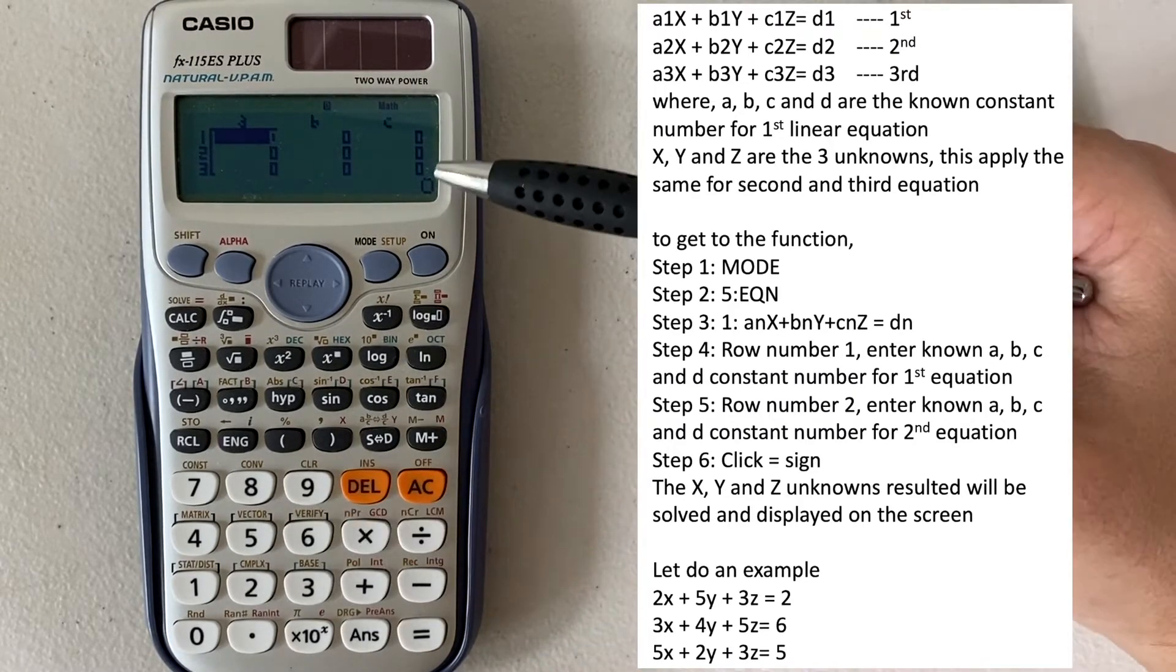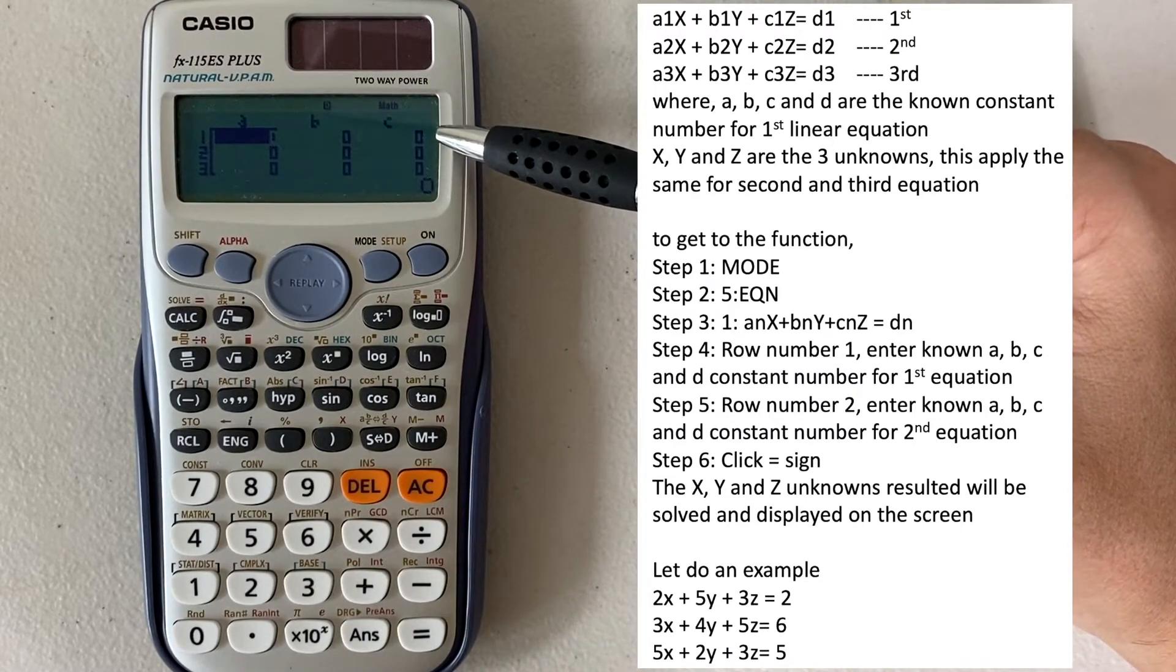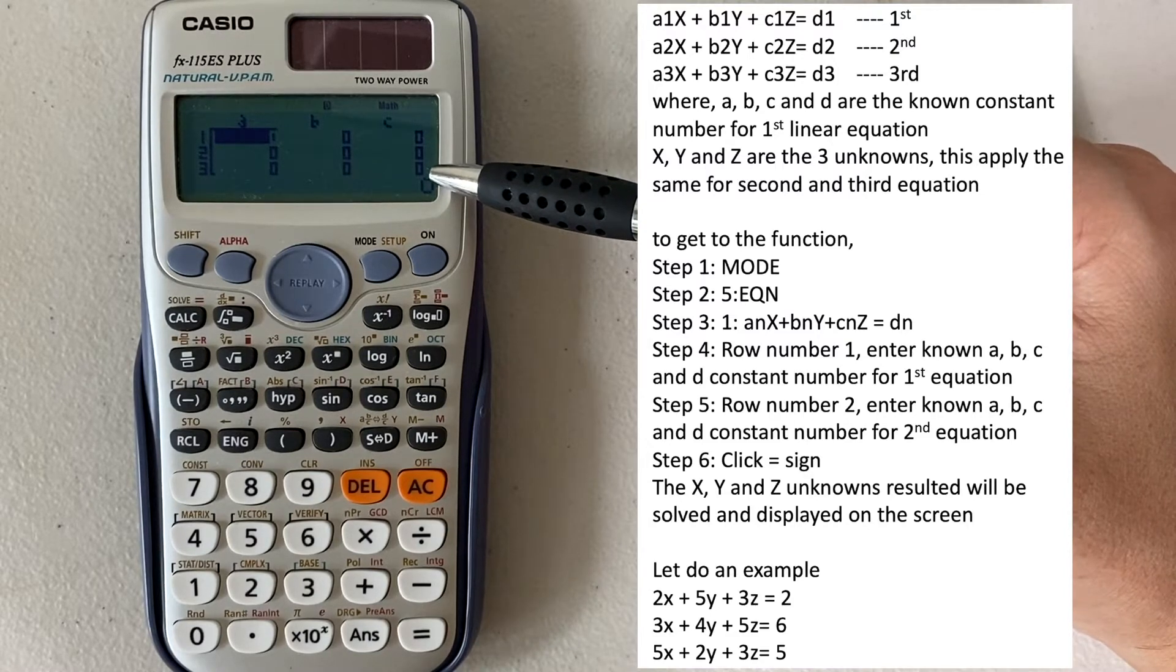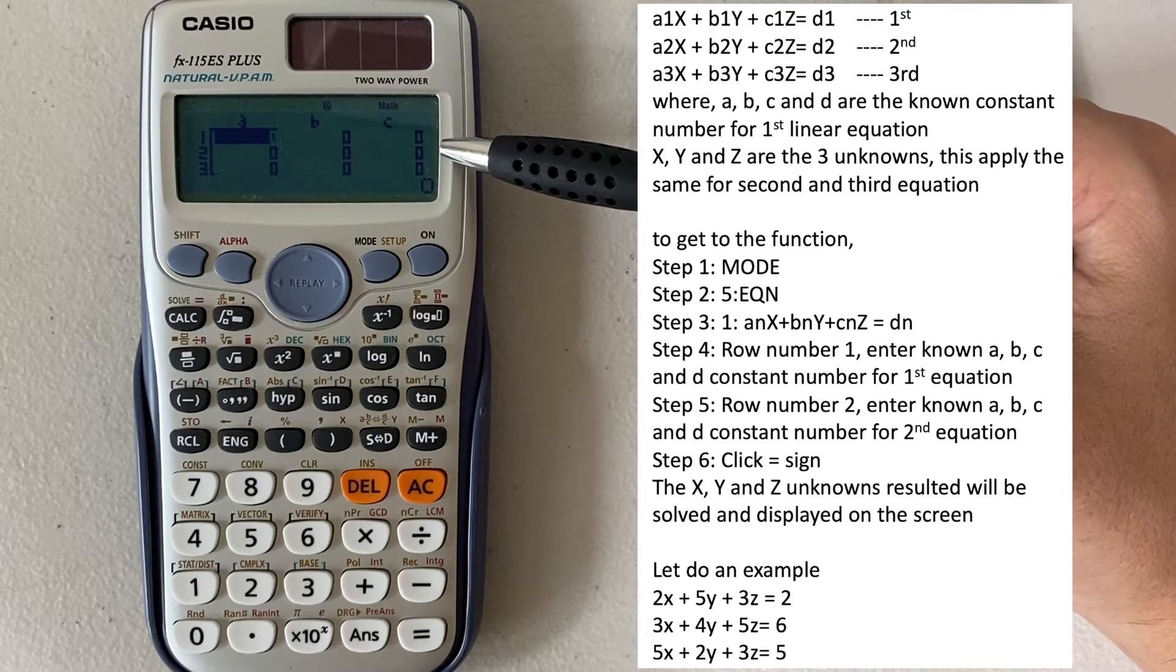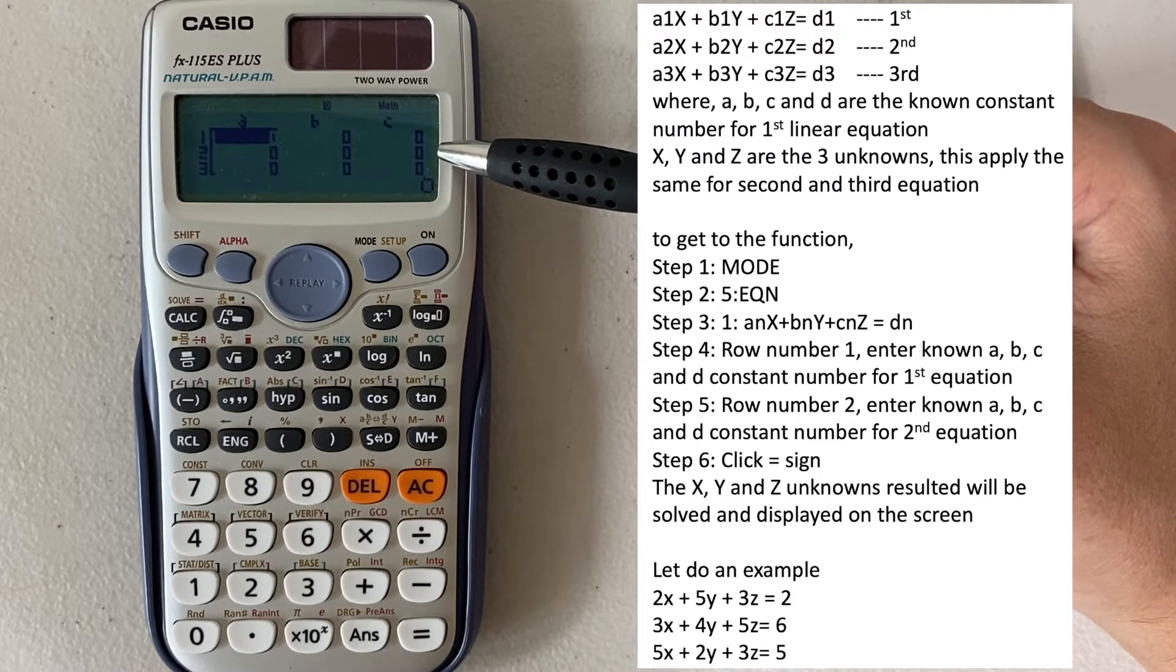And here you can see there's row number one, row number two, and row number three. In each of the rows, there's a column A, B, and C, and this represents the constants in the linear equations.